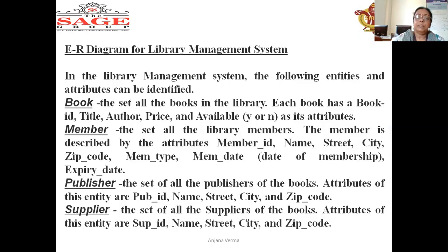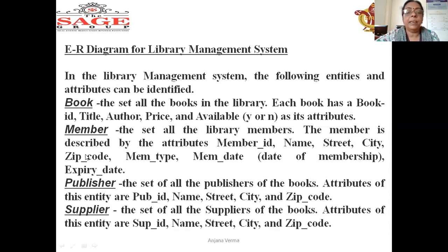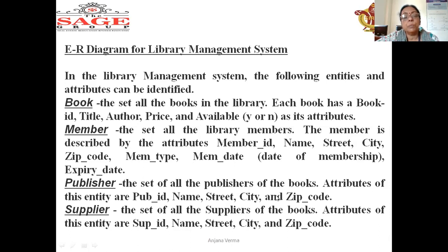Now we are making a diagram for the library management system. The entity 'Books' has attributes: book ID, title, author, size, and availability — whether the book is available in the library or not. The 'Member' entity has attributes: member ID, name, address, city, zip code, member type, date of membership, and expiry date. The 'Publisher' entity, who publishes the book, has attributes: publisher ID, publisher name, and related details.